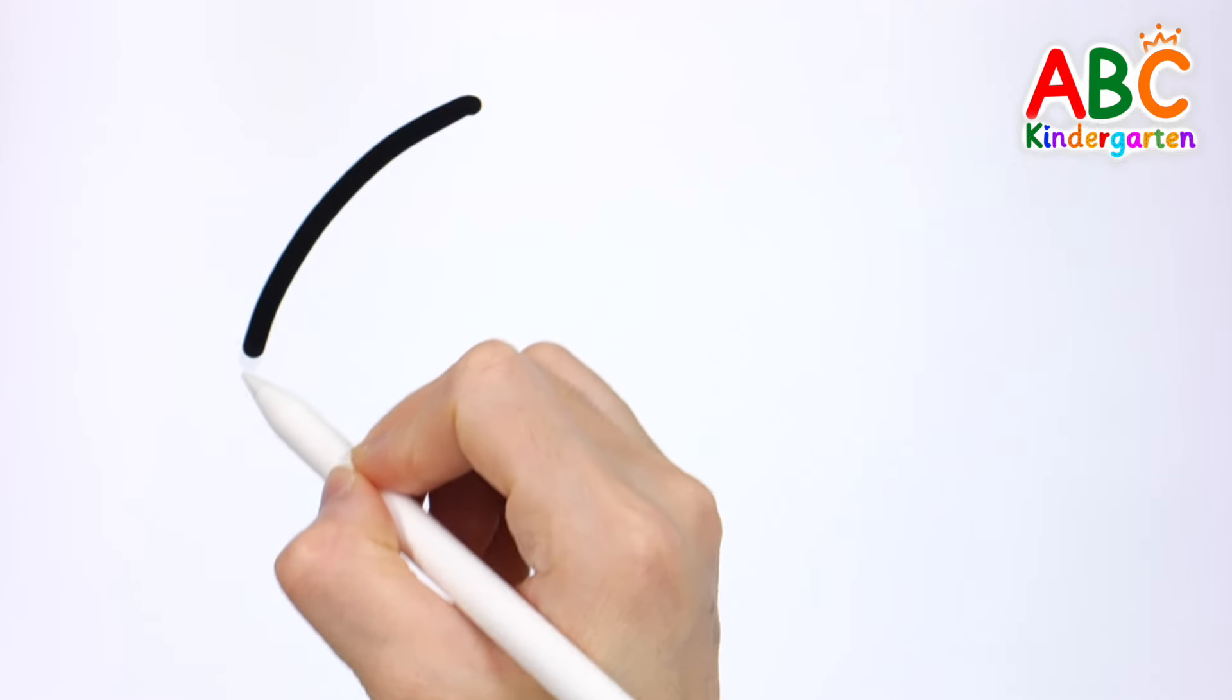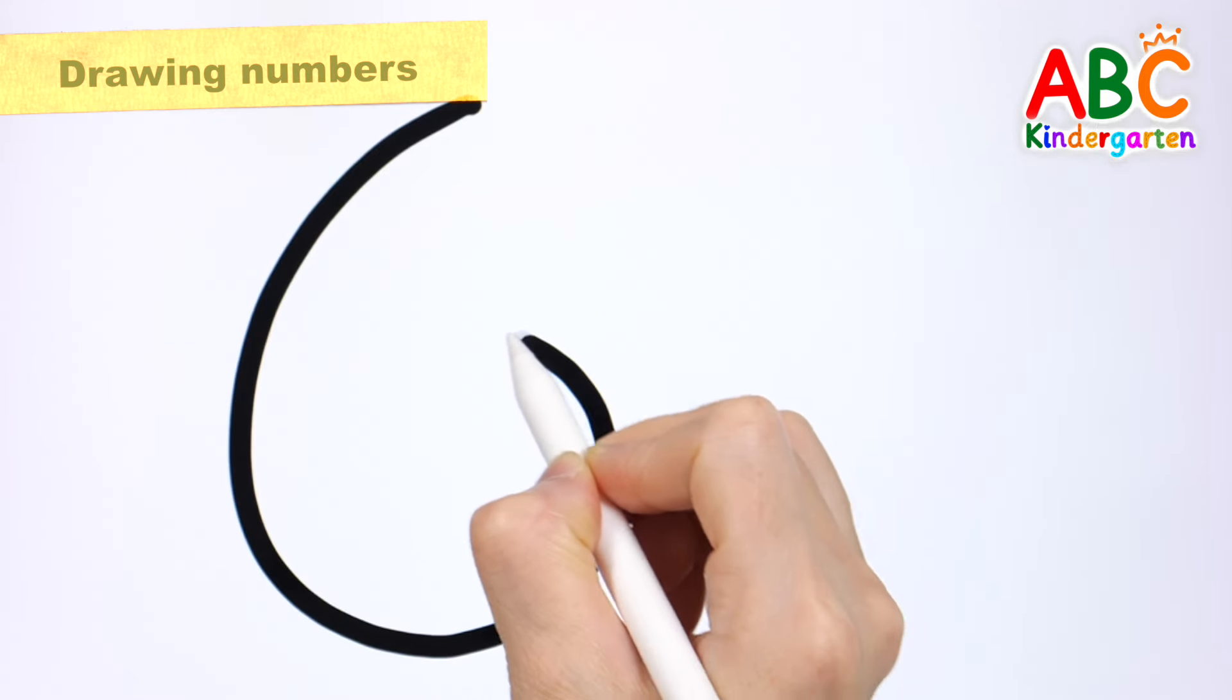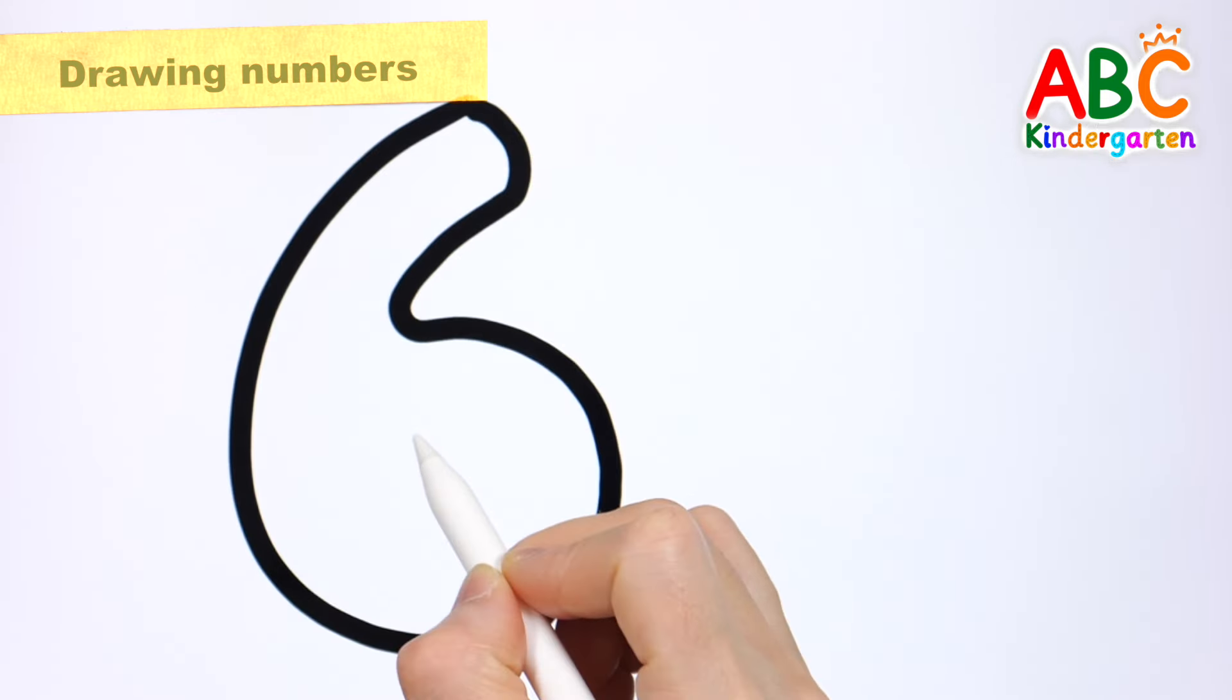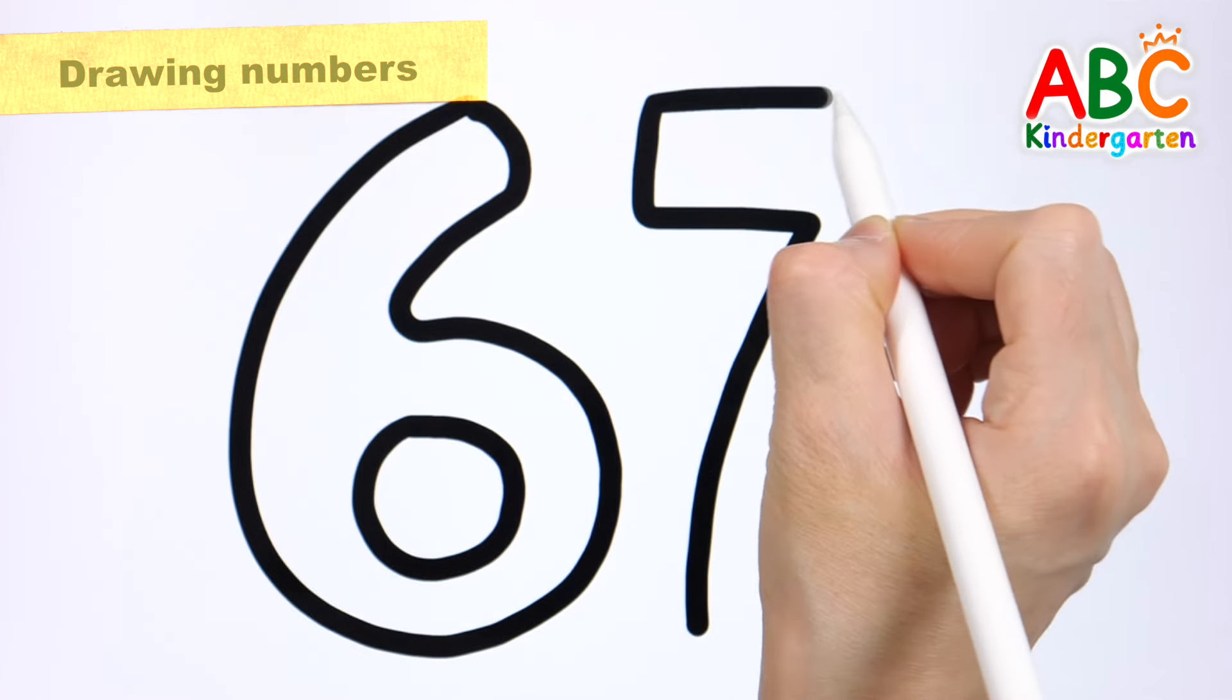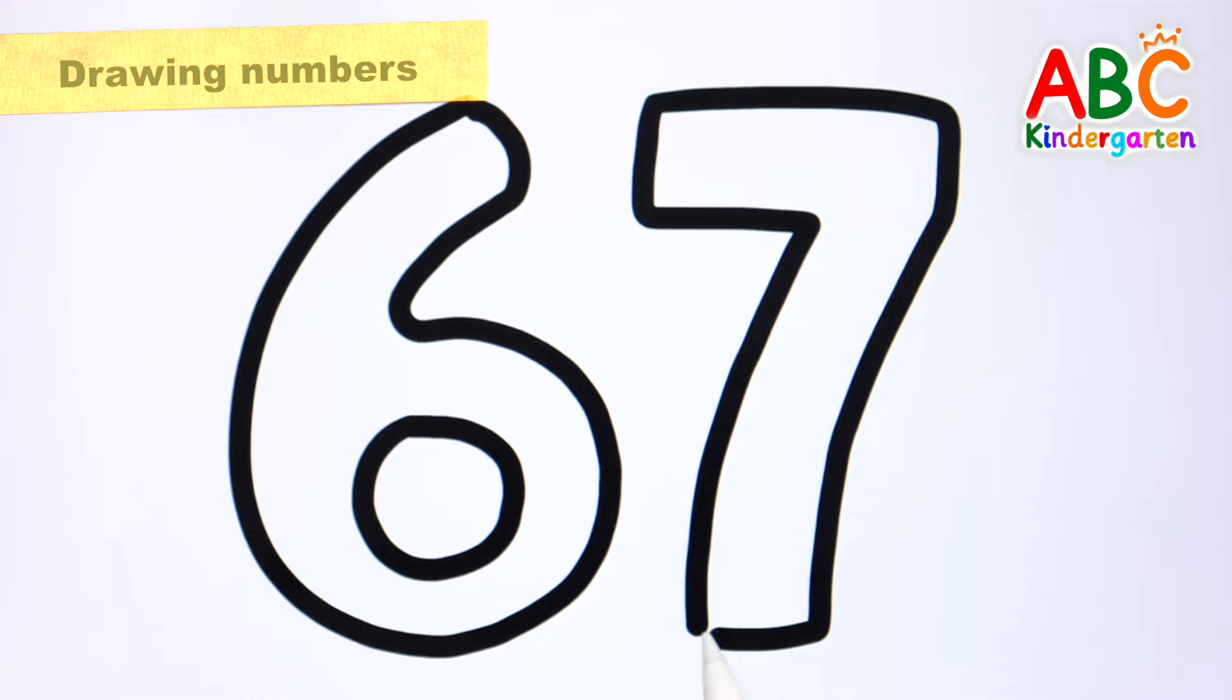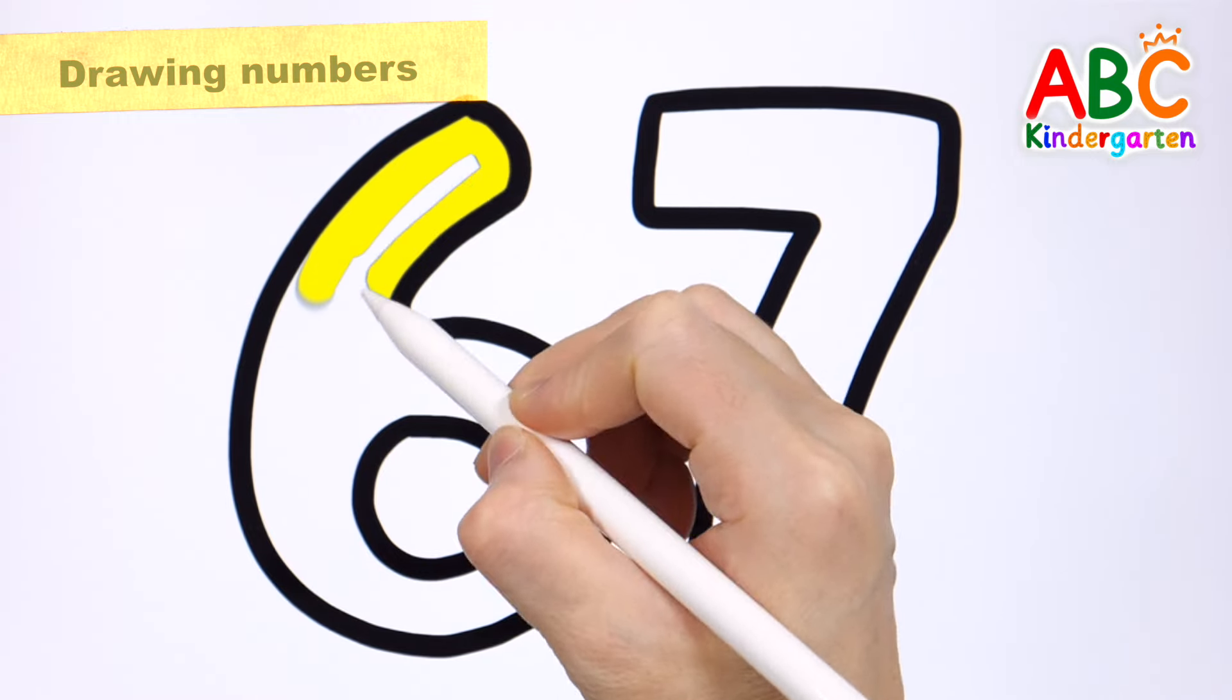Let's draw the number 67. This old man, he played one. He played knick-knack on my thumb. With a knick-knack, patty-whack, give a dog a bone. Shall we color it?